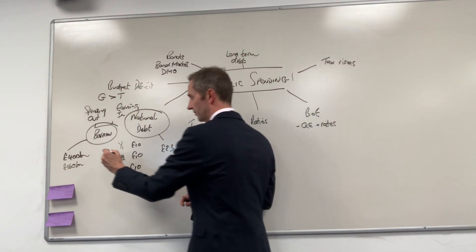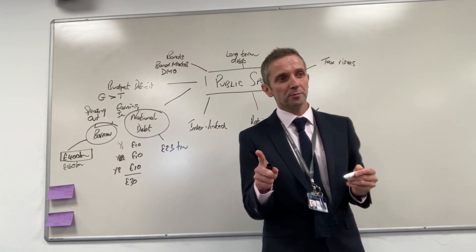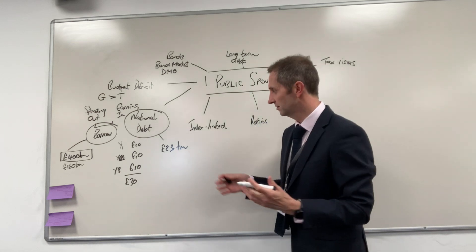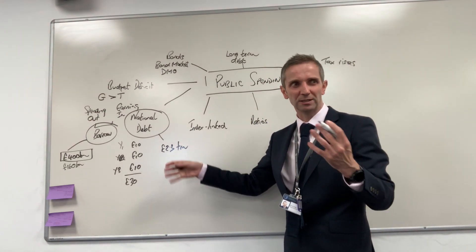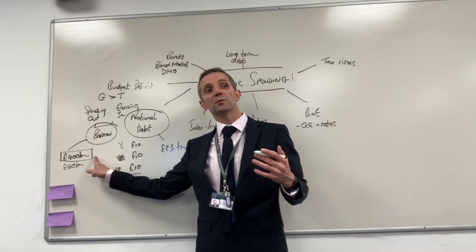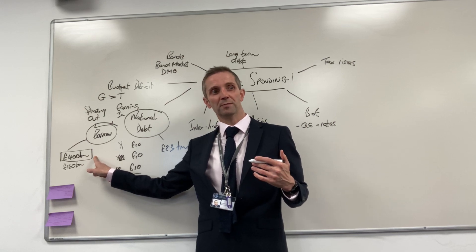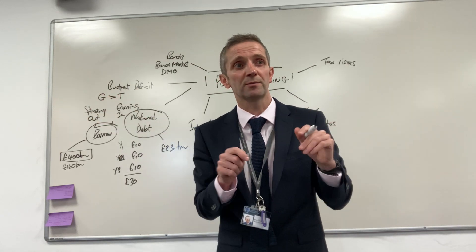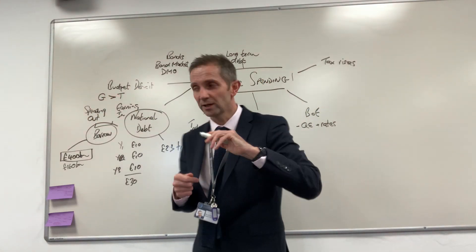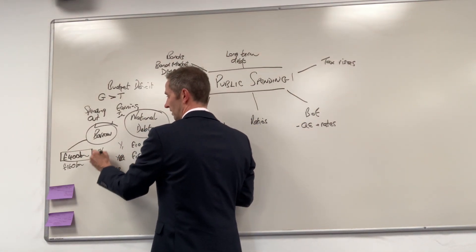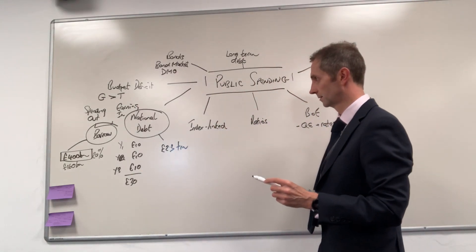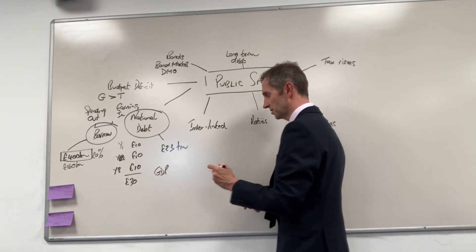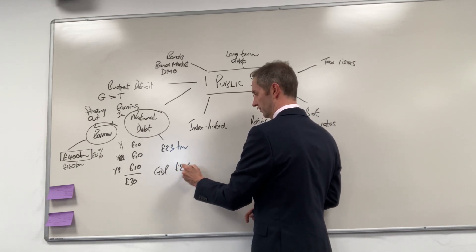If you take that 400 billion figure, bearing in mind Dylan that our economy in one year, the value of everything that we produce, is about maybe 2.5 or 2.6 trillion, that's our GDP. So that was an enormous sum of money to be borrowing in one year. 400 billion, you're talking about knocking on for 20 percent of our entire GDP.